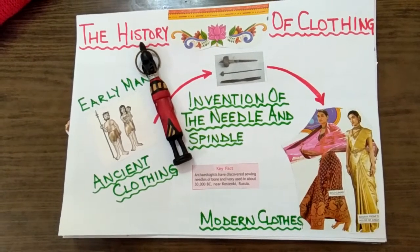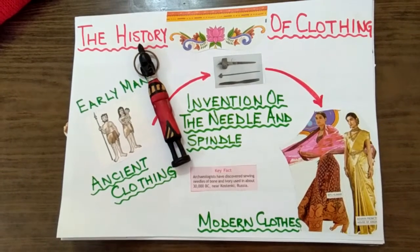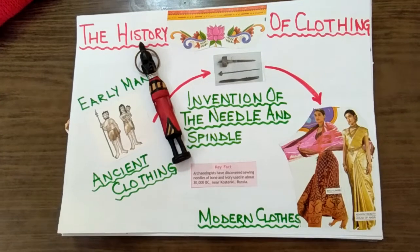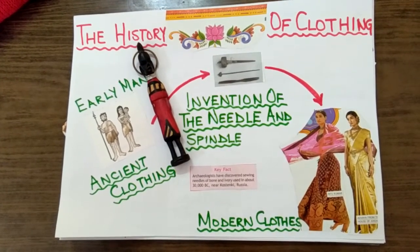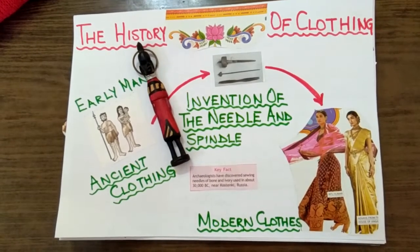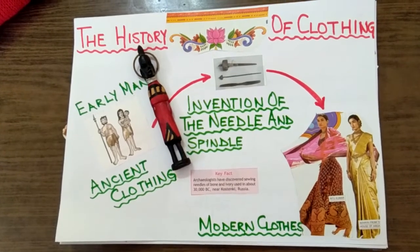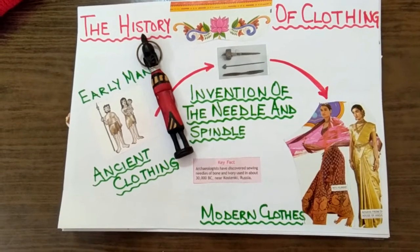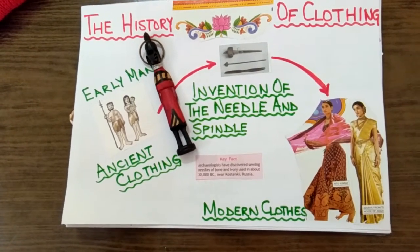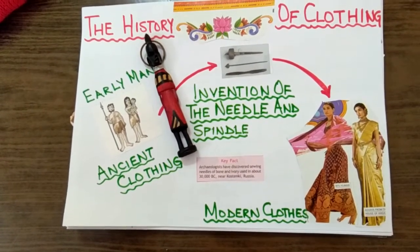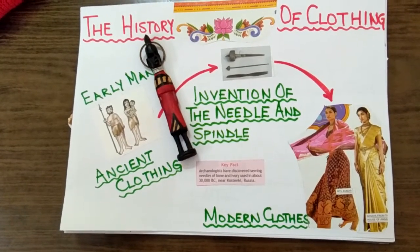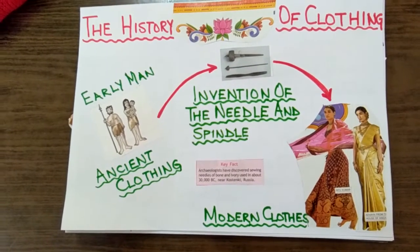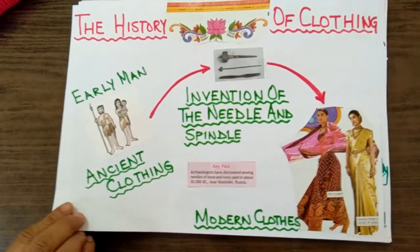These were known as unstitched clothes. The invention of the sewing needle in 4000 BC led to the stitching of fabric into various types of dresses, such as shirts, pants, suits, blouses and skirts. Even today, fabrics like saree, dhoti, lungi and turban are worn as unstitched clothes.